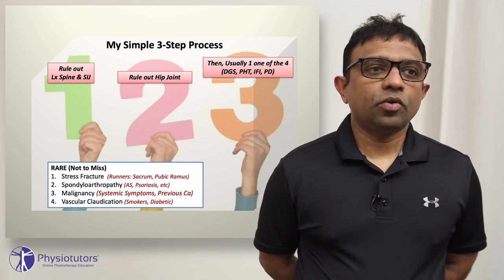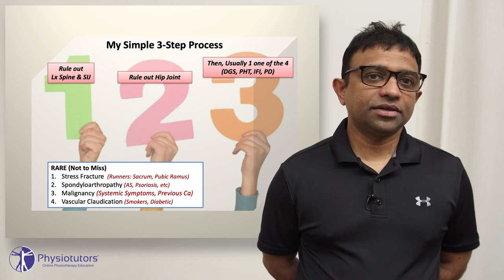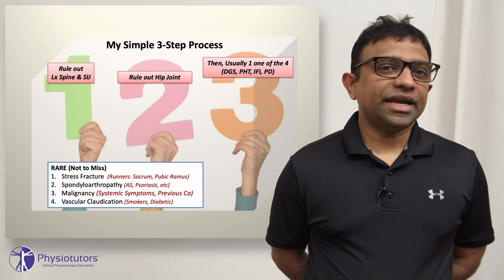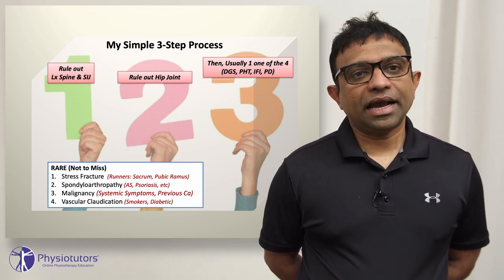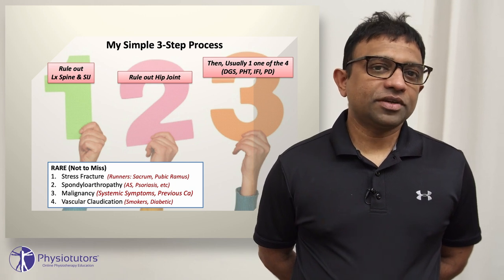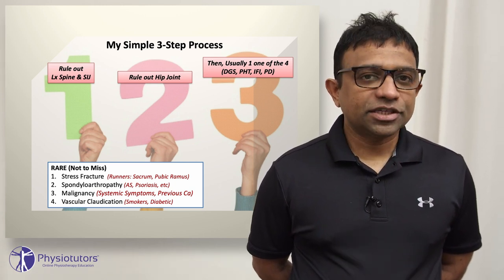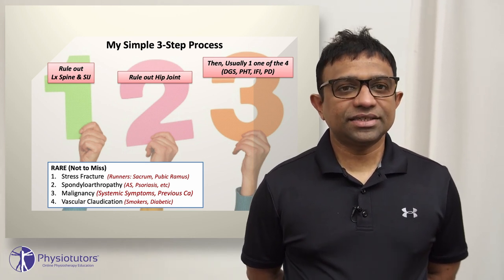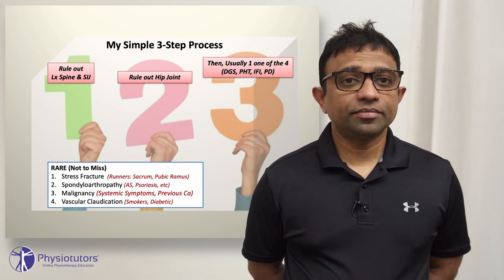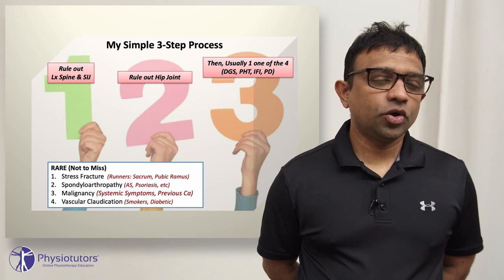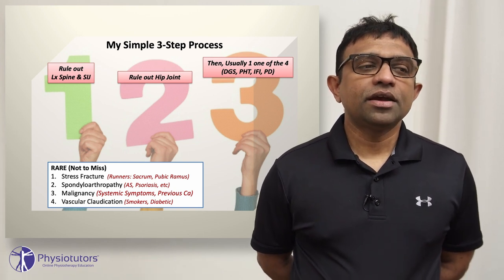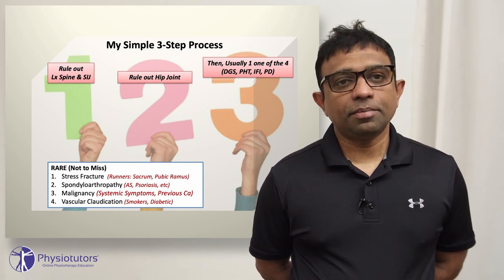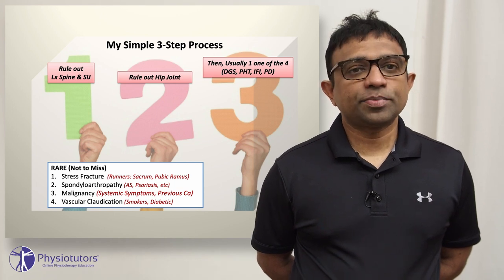The third red flag is malignancy. One of the strongest indicators of cancer is a previous history of cancer. For example, a 48-year-old female runner who had breast cancer 15 years ago presenting with worsening back and buttock pain should raise concern. The hip region is the second most common area for metastasis, after the thoracic spine. As per NICE guidelines in the UK, unexplained hip pain in somebody with a previous history of cancer requires an MRI to rule out secondaries, particularly around the hip and pelvis.